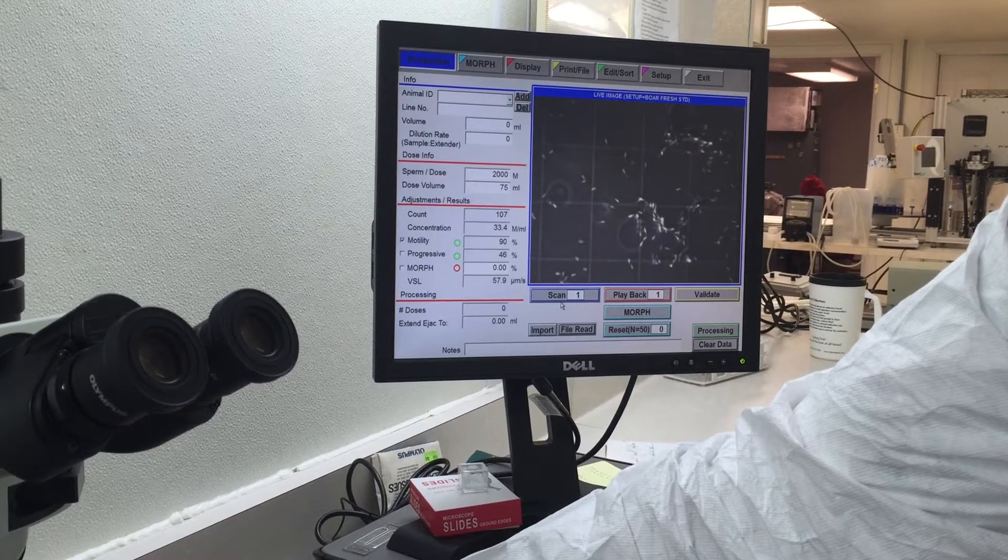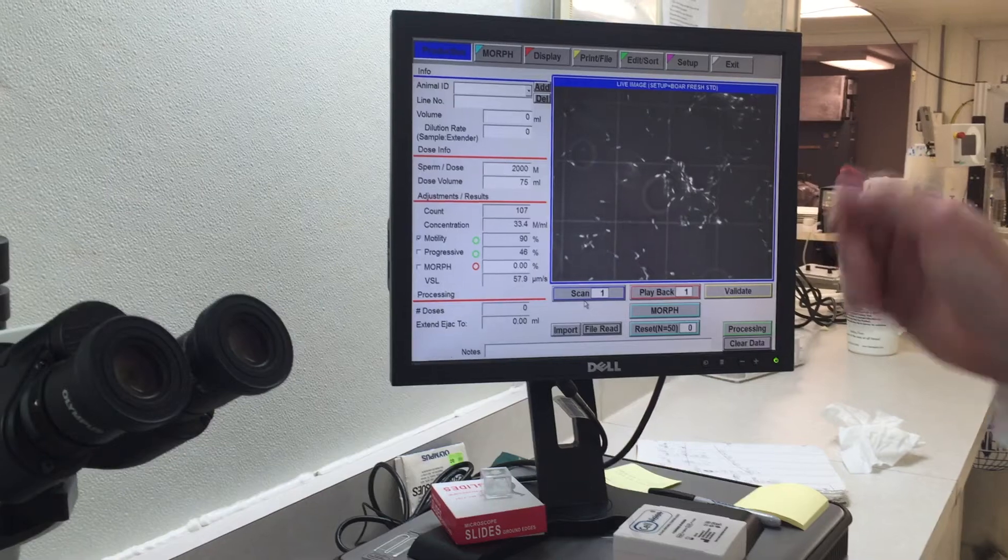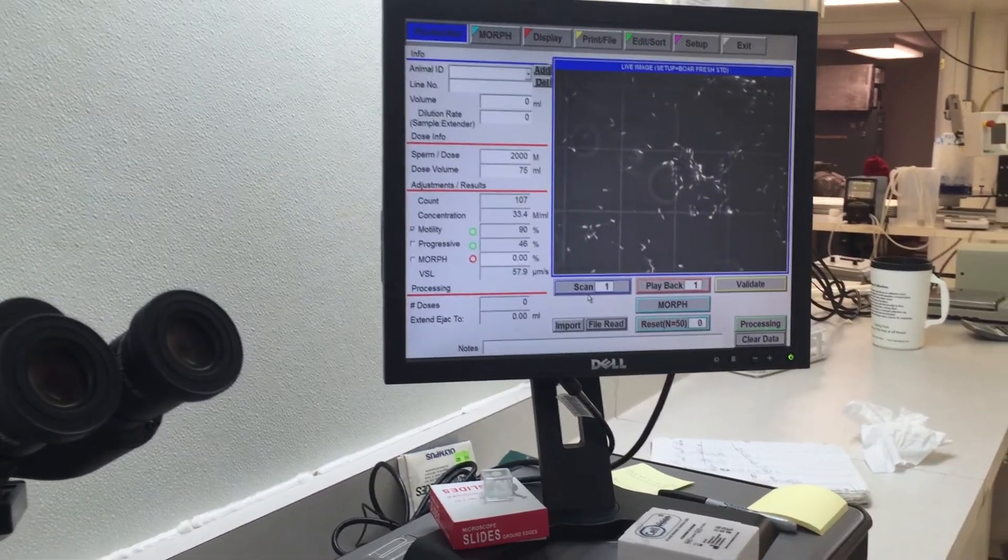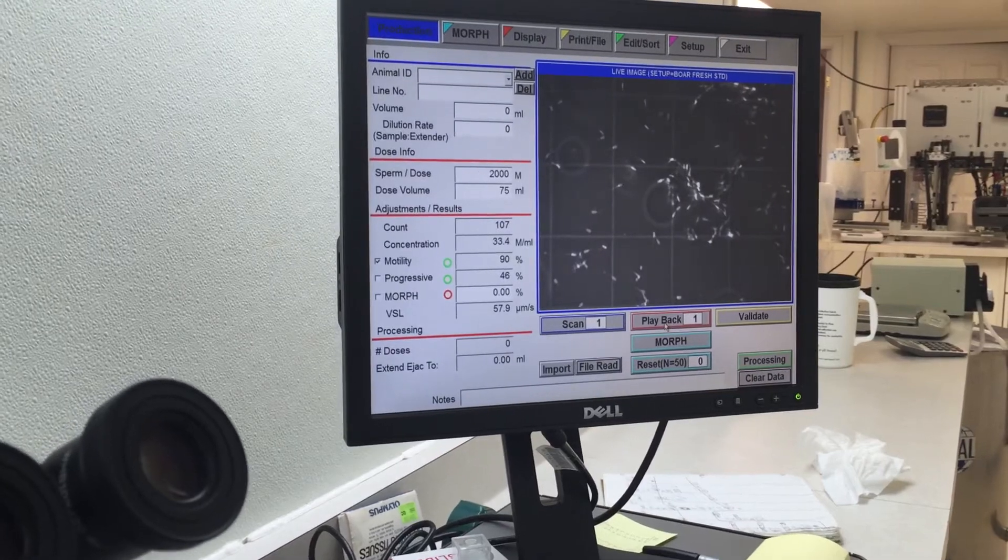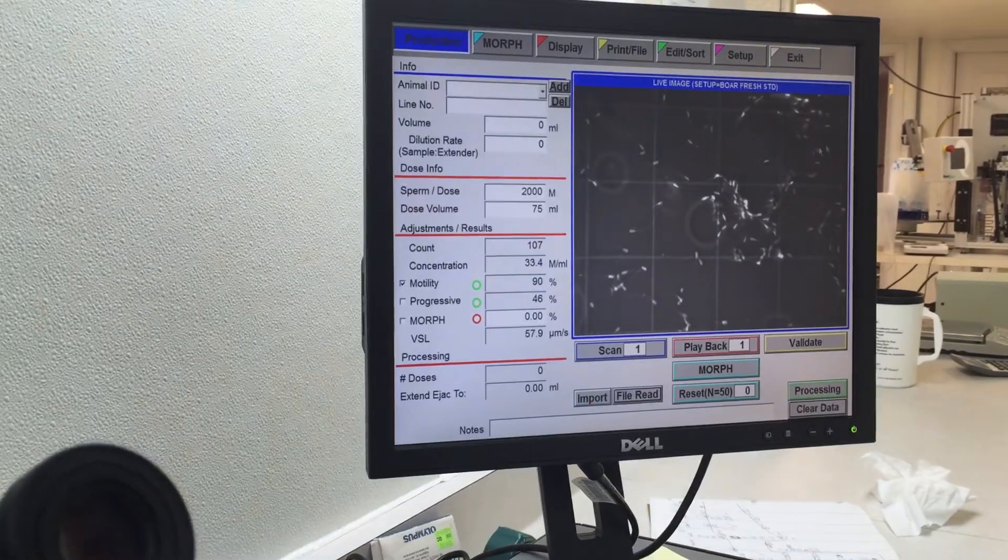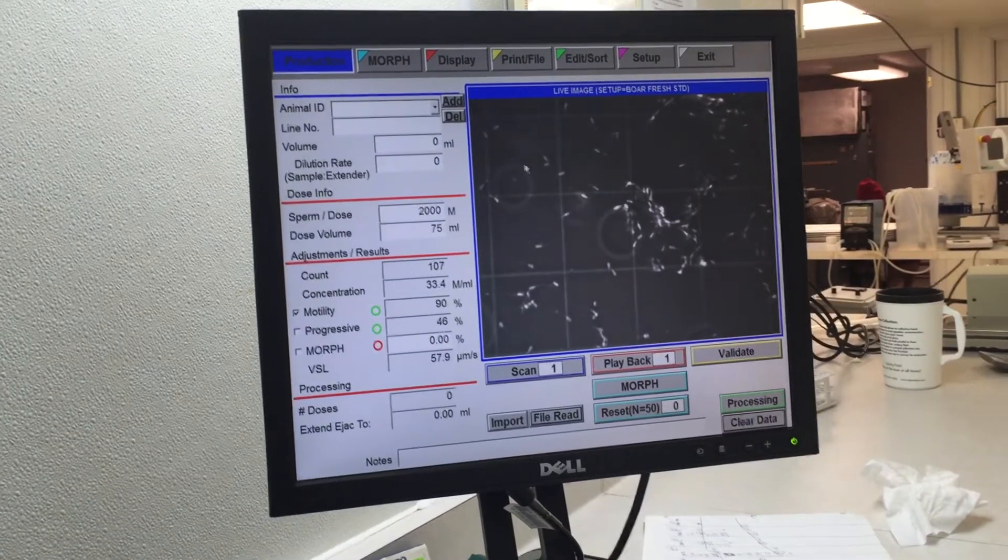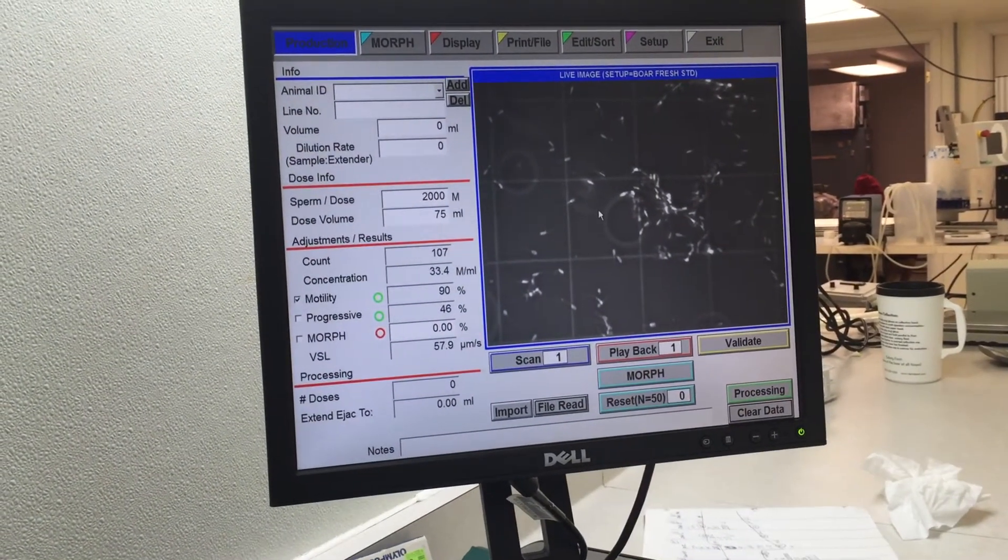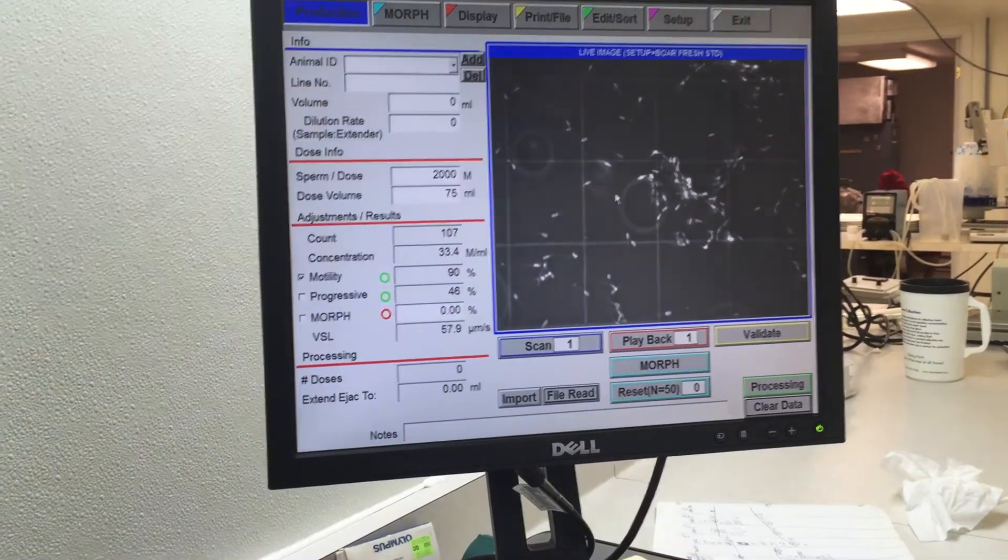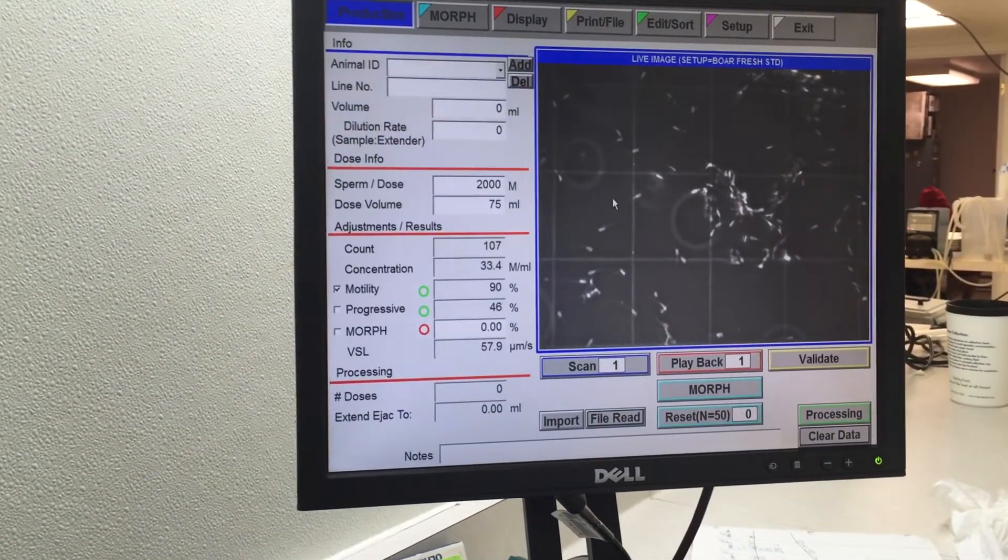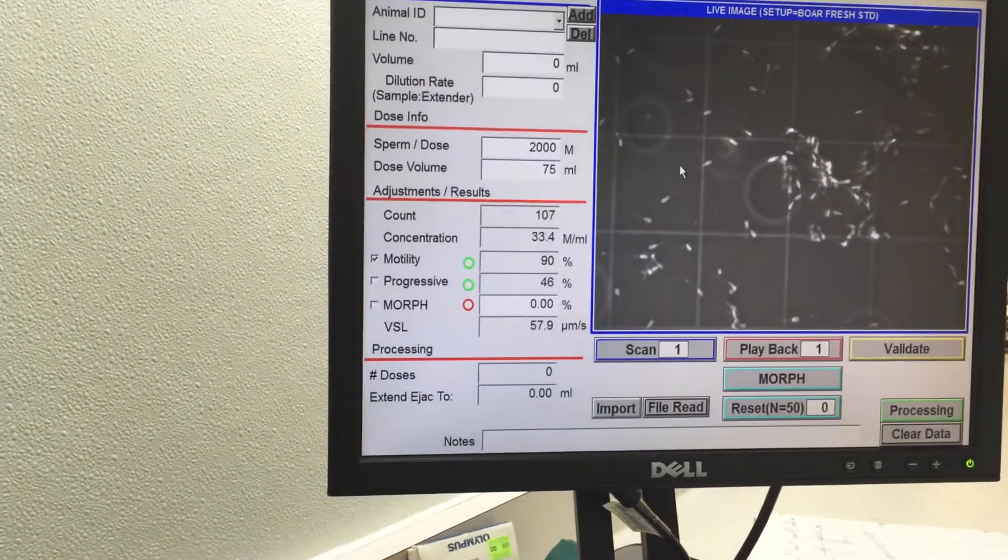So the grid has ten little squares across and ten little squares down, so ten by ten. What we need to count is the number of cells within each square in one row of ten. We want to do two rows or two columns, or one column and one row—basically two readings per chamber. Since we loaded both chambers, we'll end up with four readings. We'll average the count and use that average to calculate our concentration.